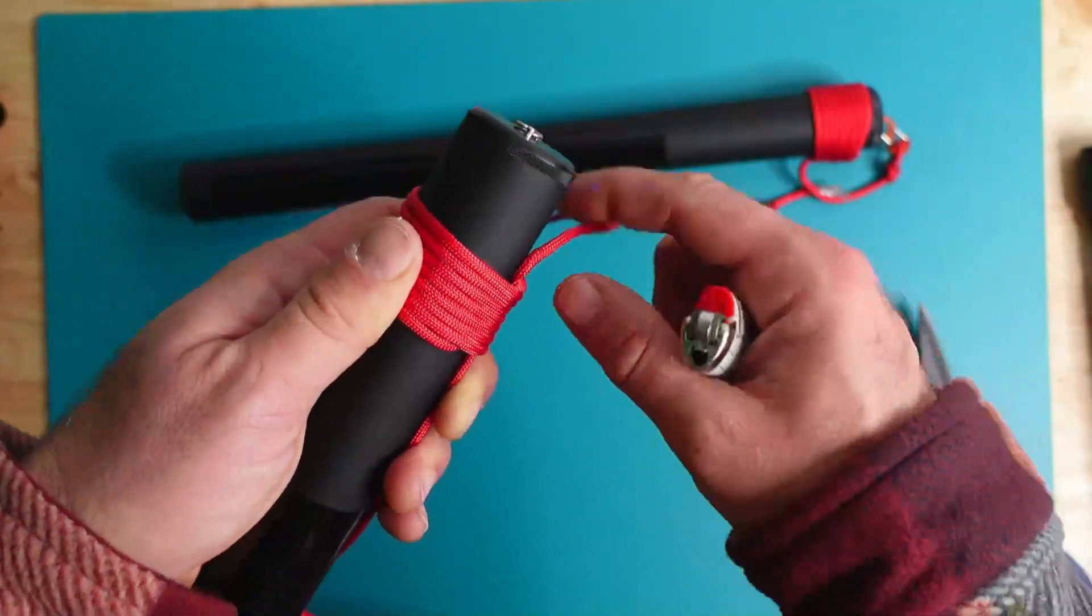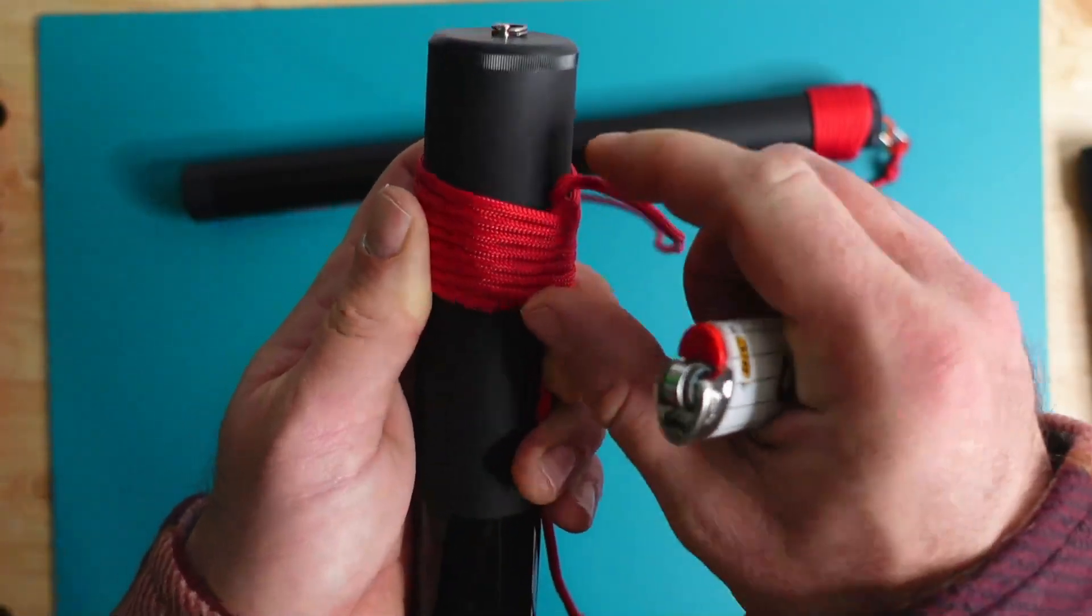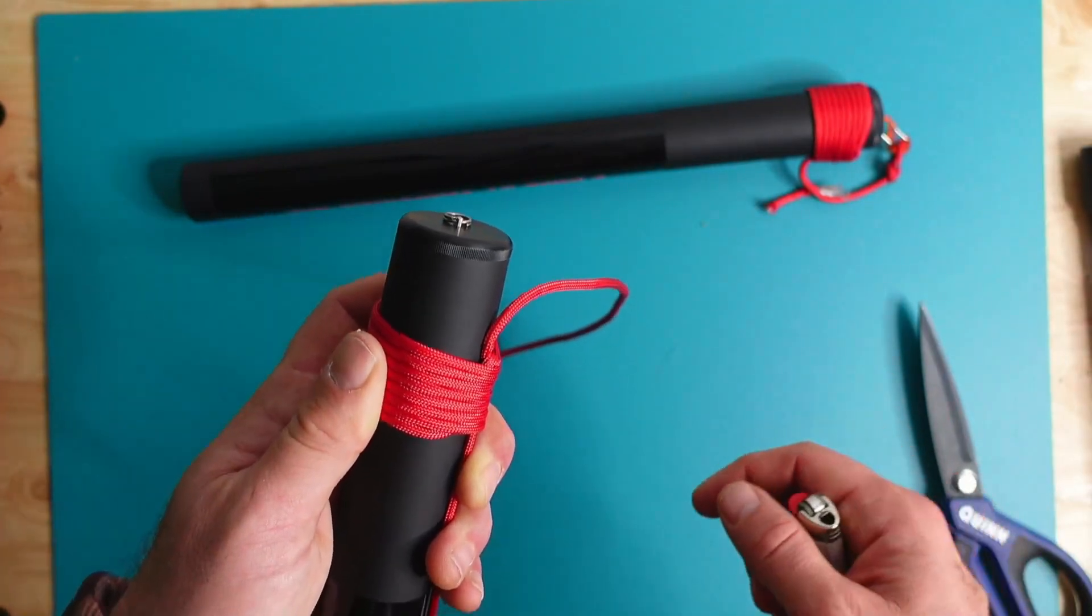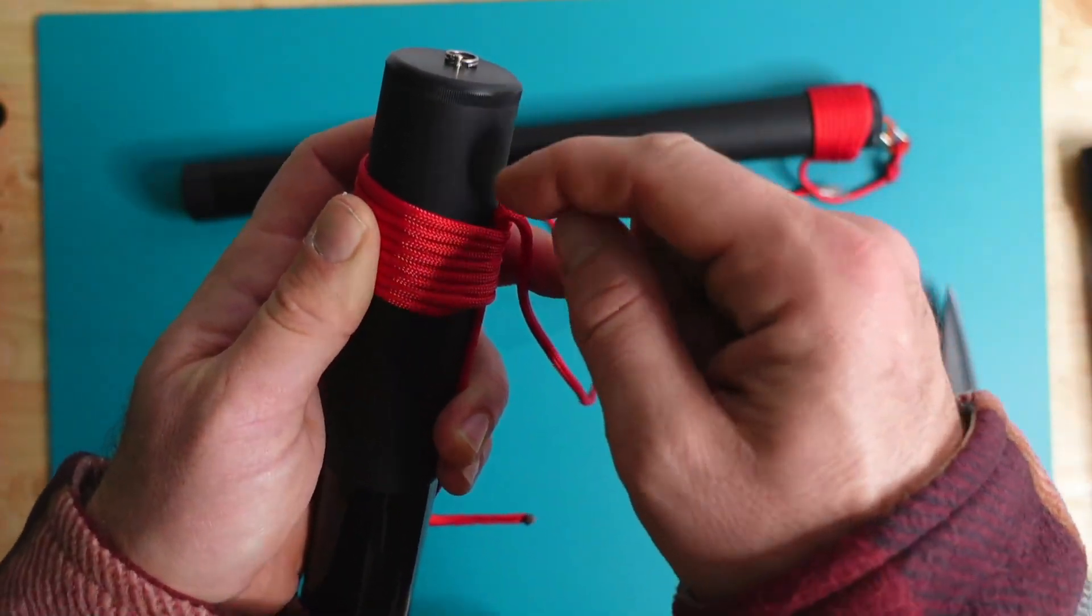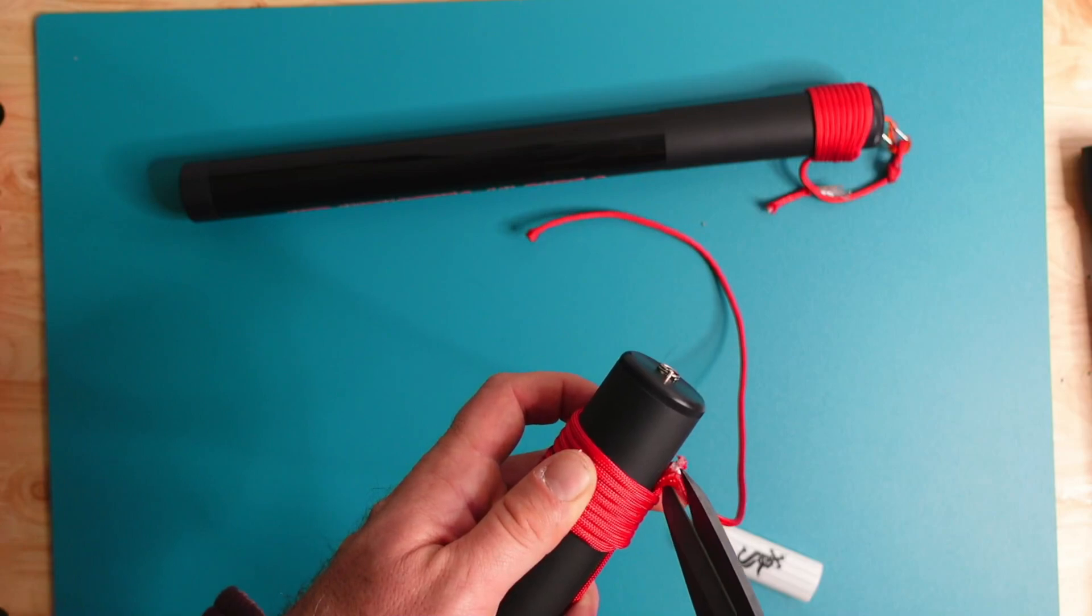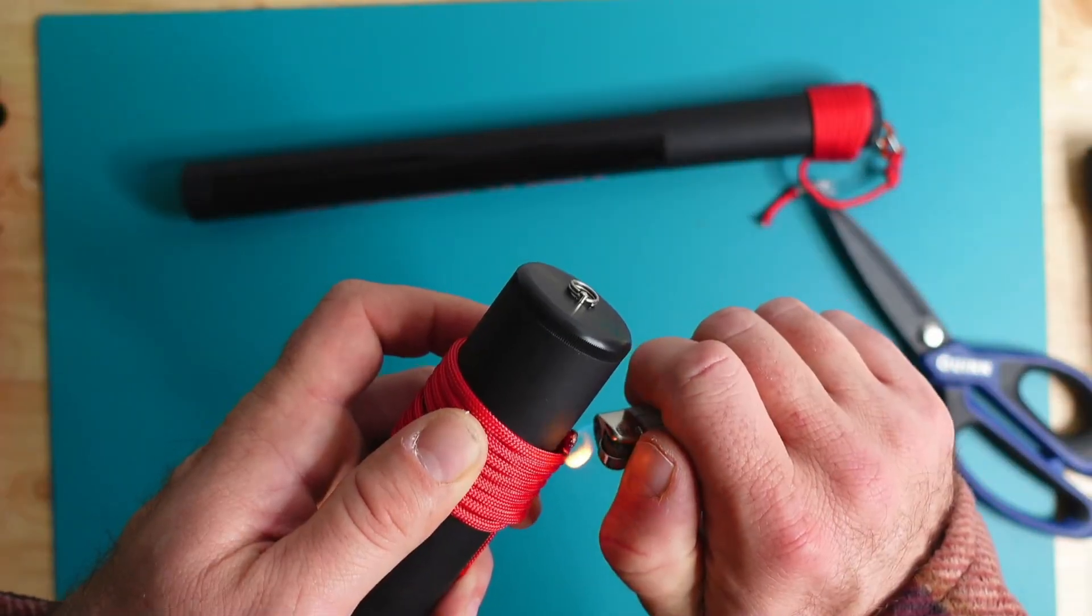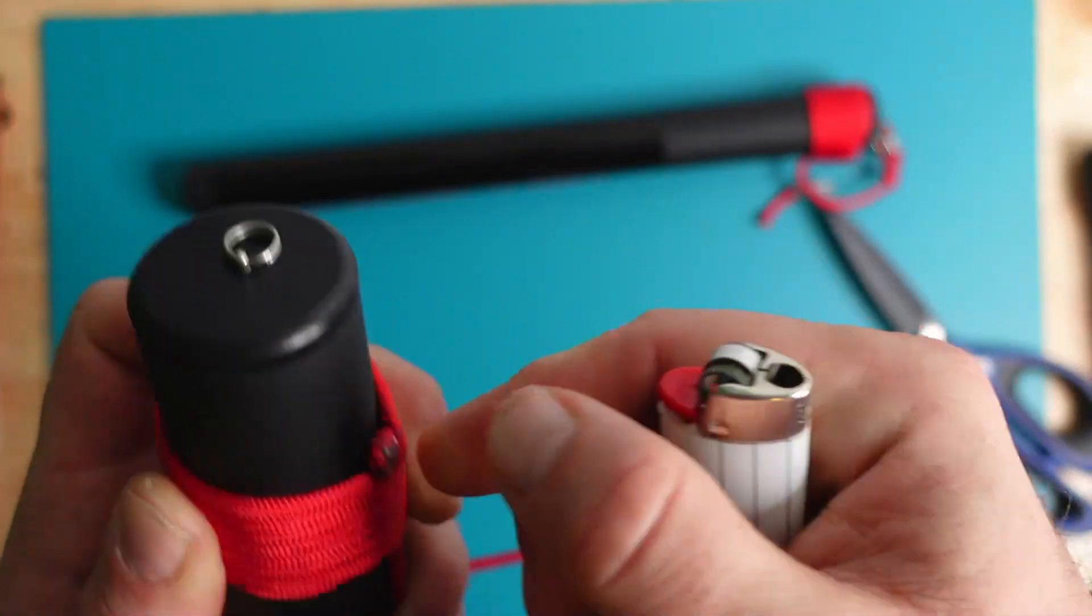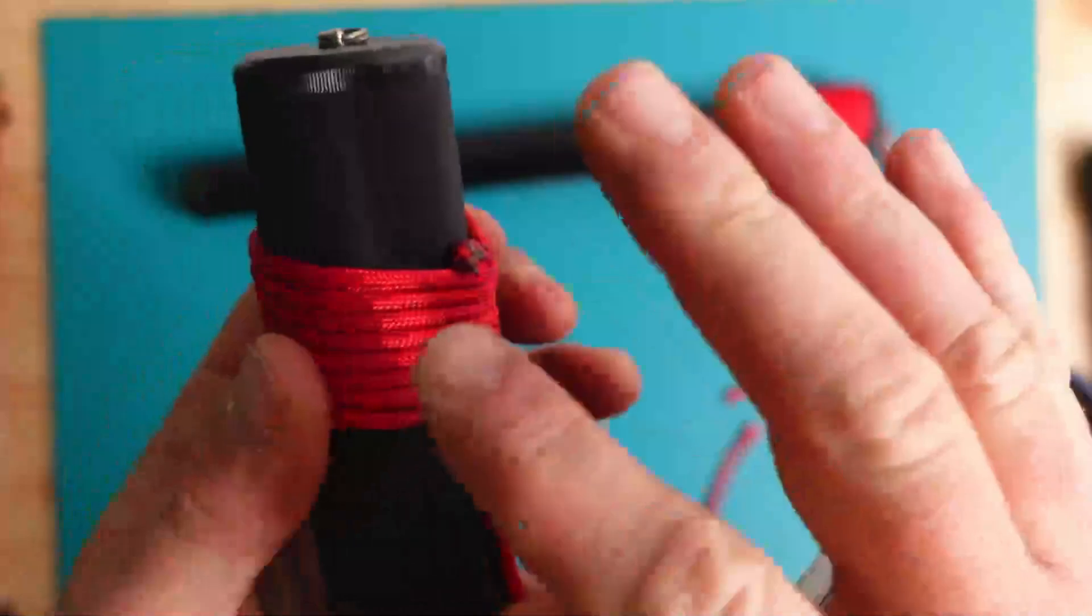Then I'm going to take a lighter and carefully hit the 550 cord or the nylon with the lighter. That will melt some of the nylon so that basically the 550 cord can't really move around too much. It has somewhere to adhere to. And then cautioning ourselves again to ensure we don't really burn the mast.